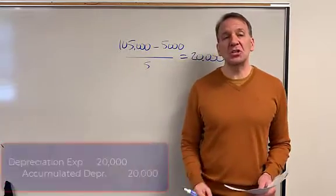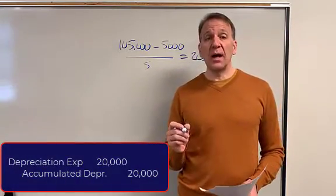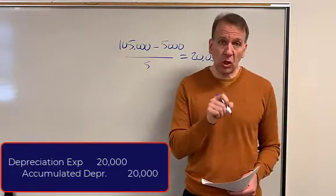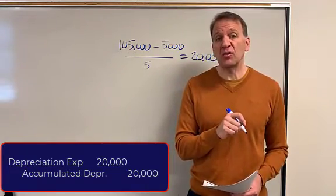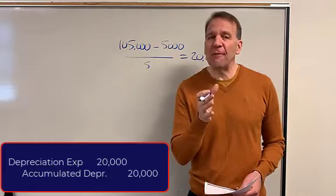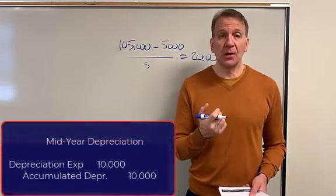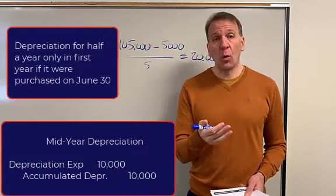Remember, our depreciation journal entry in the first year was debit to depreciation expense $20,000, credit to the accumulated depreciation $20,000. If we only had it for half a year, you wouldn't depreciate it a full $20,000 in the first year.